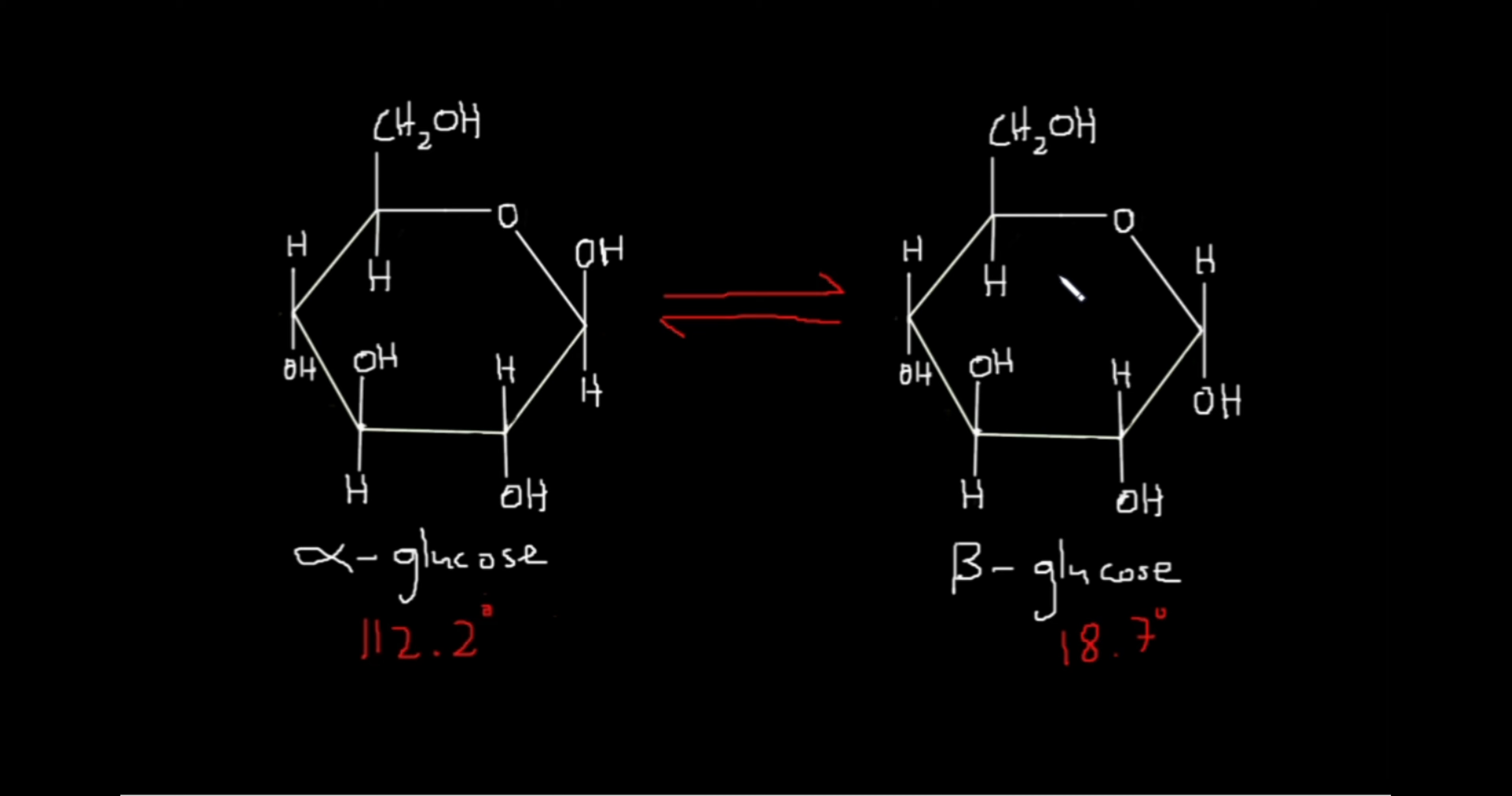If you put pure alpha glucose or pure beta glucose in a solution and allow it to reach dynamic equilibrium, you will find at equilibrium that the overall bending of plane polarized light is 52.7 degrees. This angle is closer to that of beta glucose, so the beta form is more favored and more stable. About 64% of all glucose exists in the beta form, whereas approximately 36% exists in the alpha form.